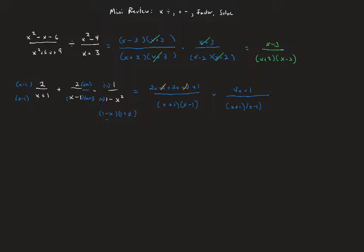Now let's try factoring a sum or difference of an odd power. Let's factor 8x cubed minus 125. The key is to recognize that 8 is 2 cubed, so 8x cubed is 2x quantity cubed, and 125 is 5 cubed. We have to remember our pattern: for the difference of cubes, the binomial term agrees with the sign of the original expression being factored, then we go down in powers of a and up in powers of b.